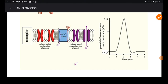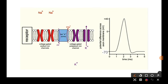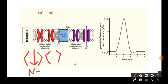An action potential is the actual electrical or nerve impulse being transmitted. This happens by a change in the permeability of the membrane via voltage-gated channels. The Na⁺ channels open, letting sodium ions rush inside, and the membrane potential goes from negative 70 up to positive 40 millivolts. It's very important to memorize these numbers as they appear in multiple-choice questions.